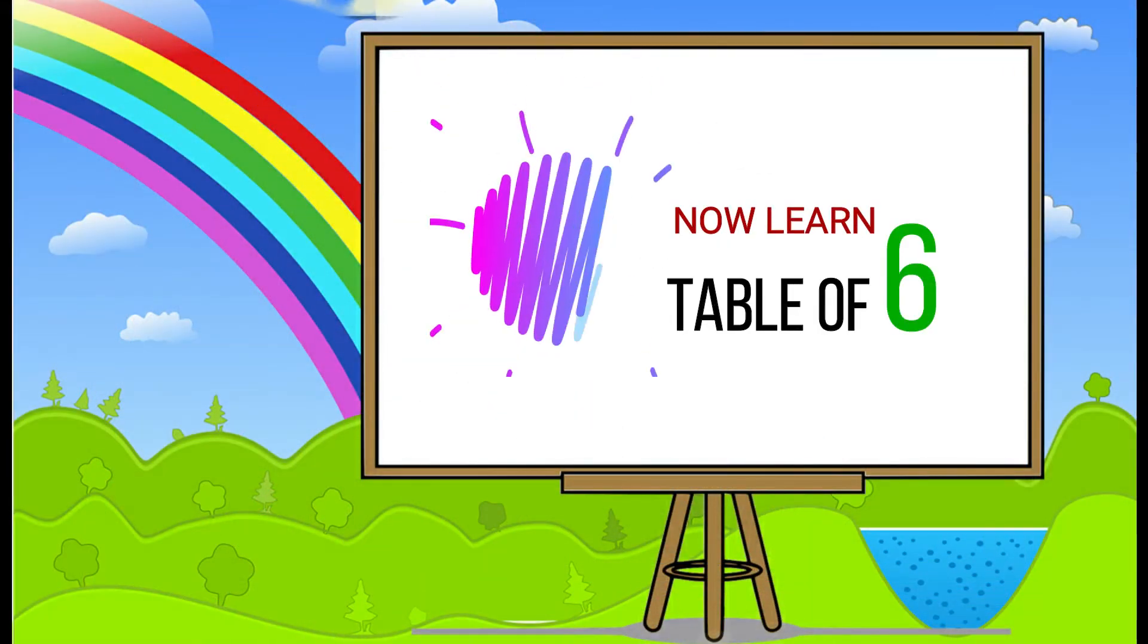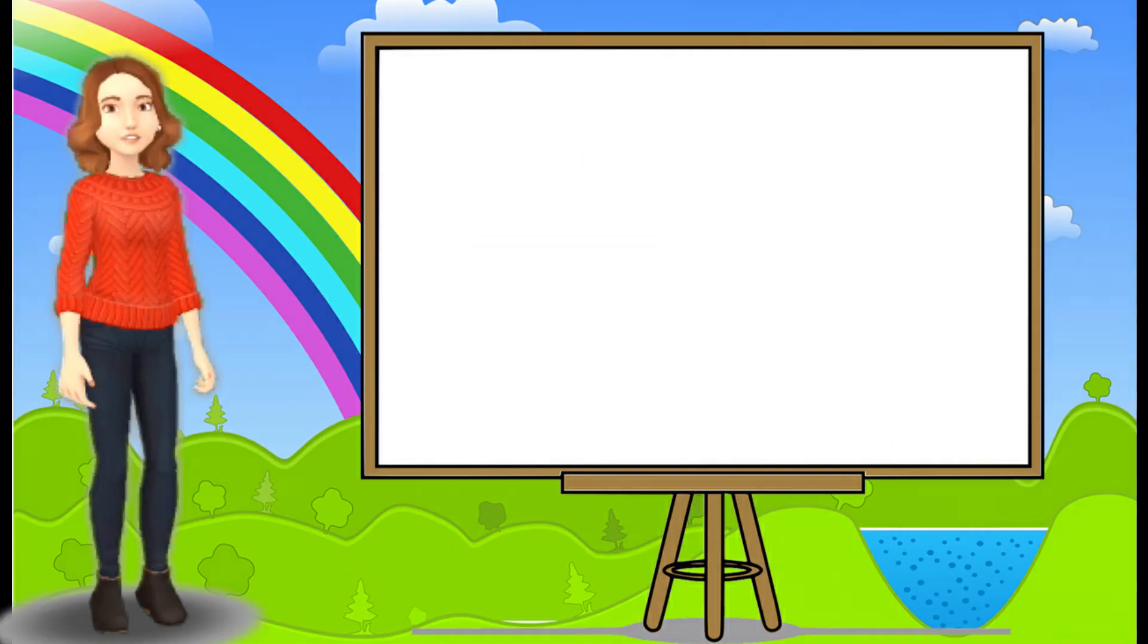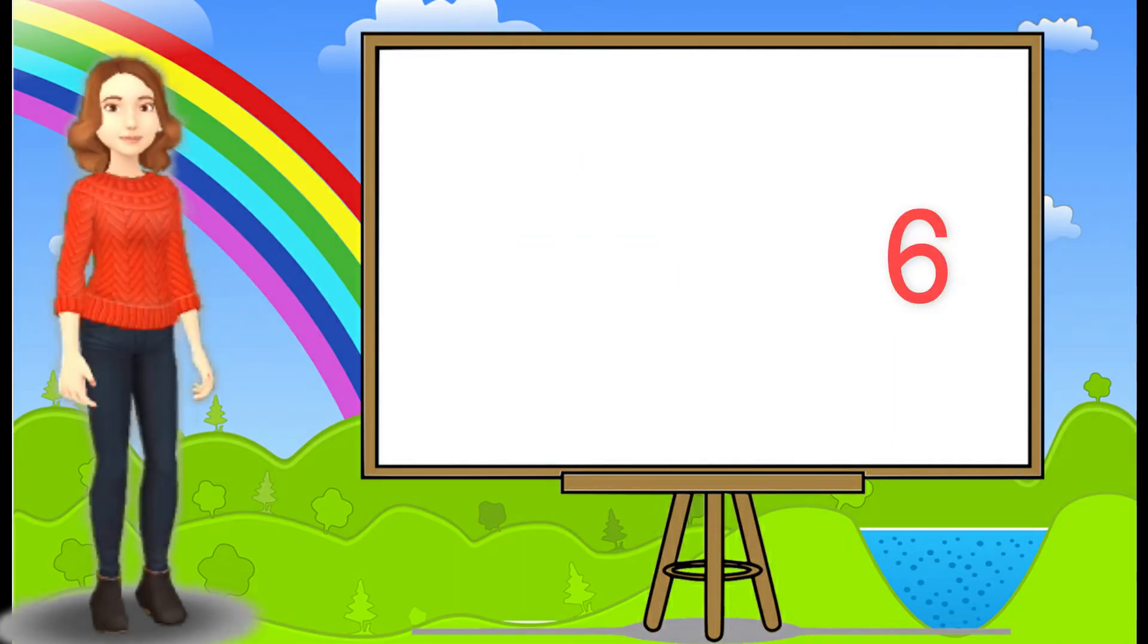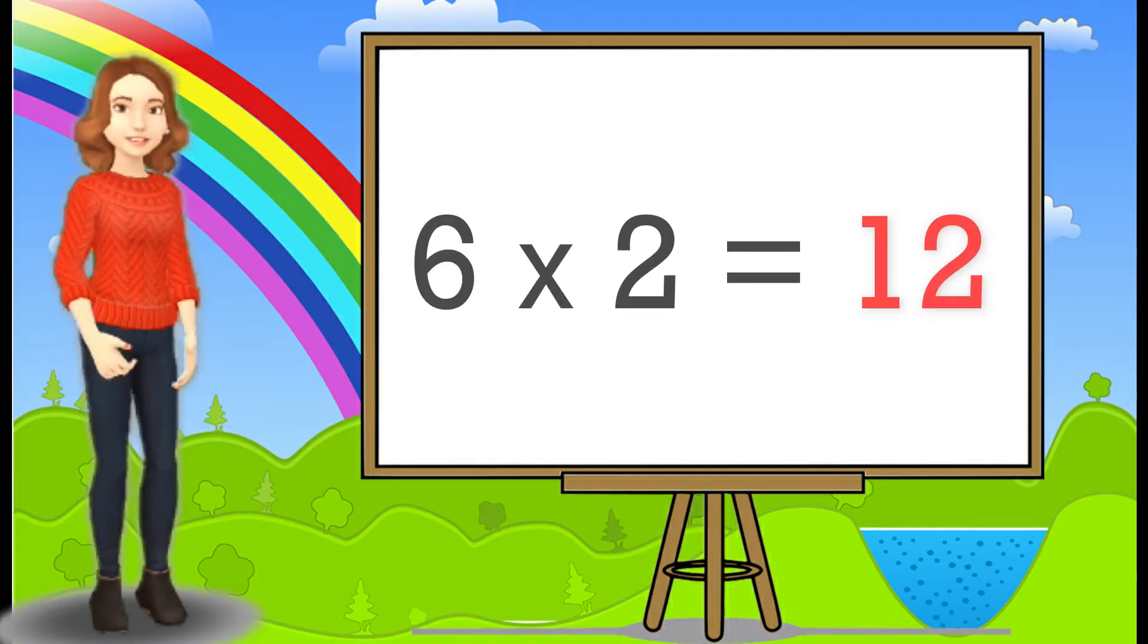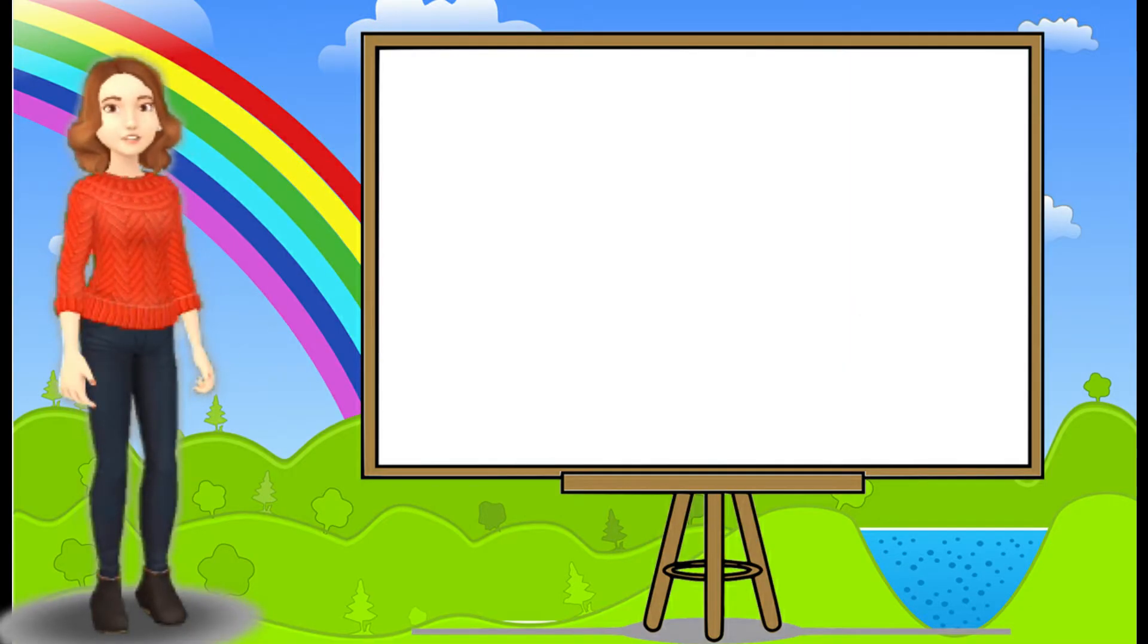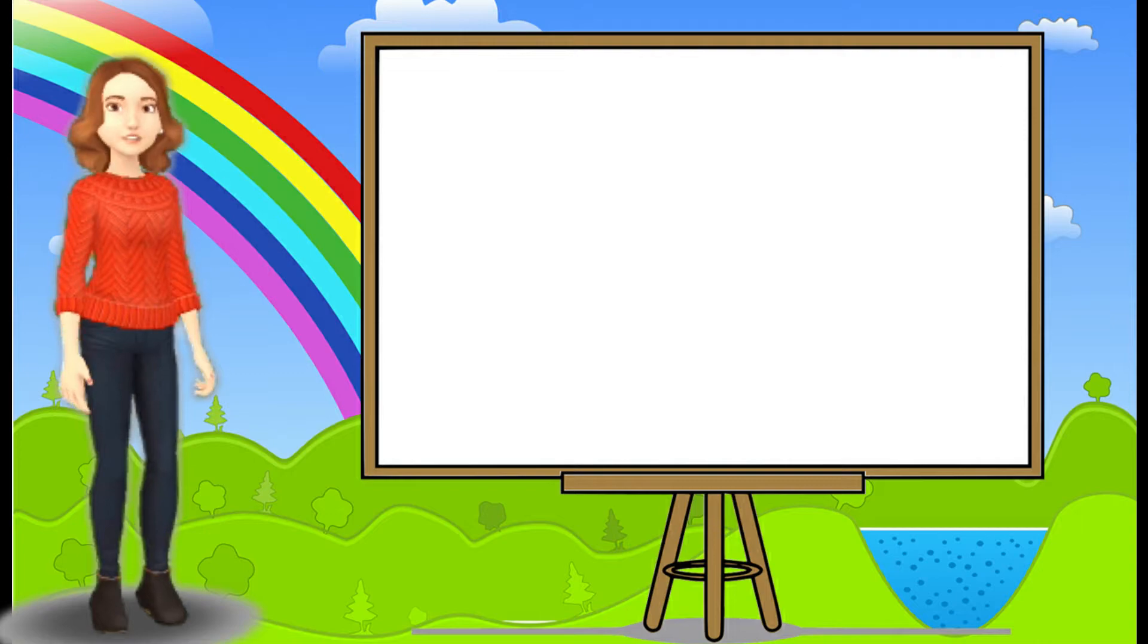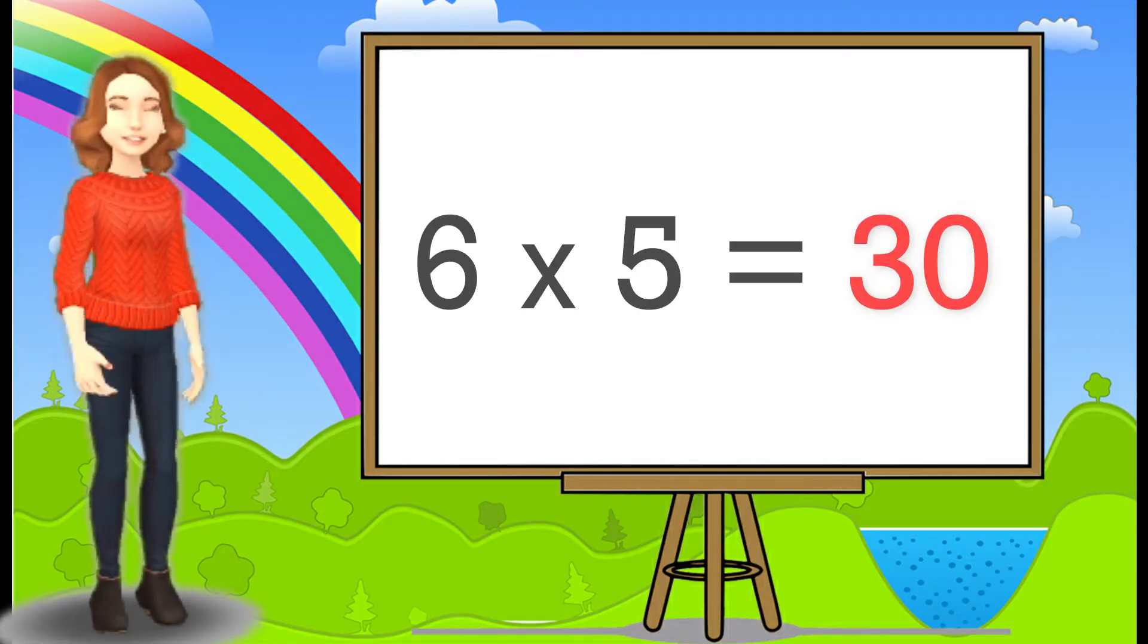Now learn table of 6. 6 ones are 6. 6 twos are 12. 6 threes are 18. 6 fours are 24. 6 fives are 30.